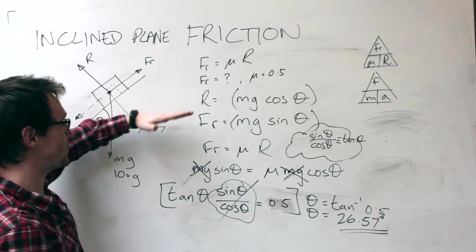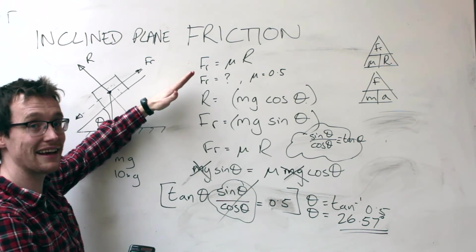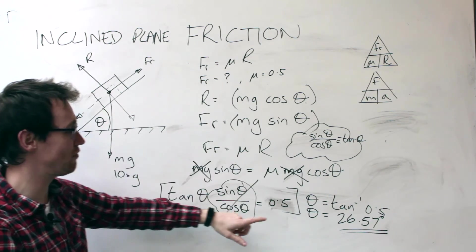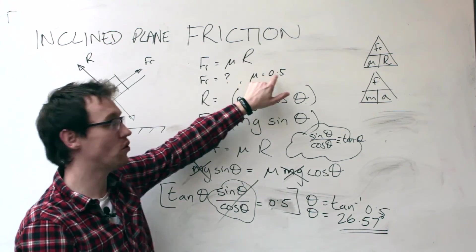So the block will stay where it is until you hit 26.57 degrees, and at that point it will start to move down the slope for a given friction of 0.5.